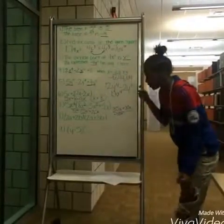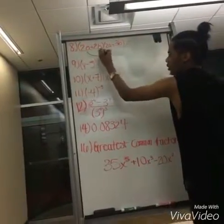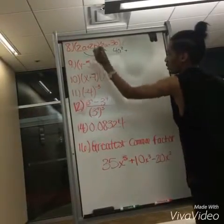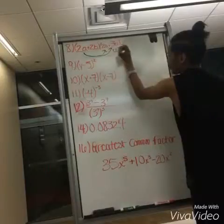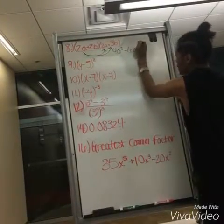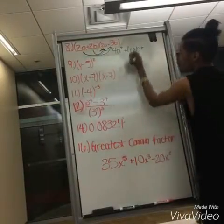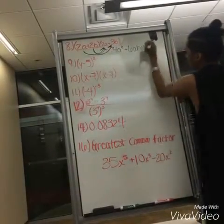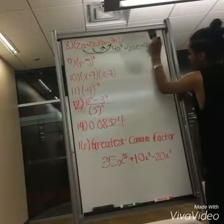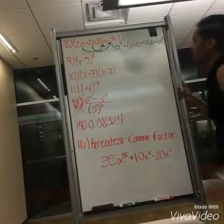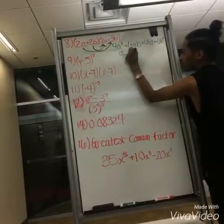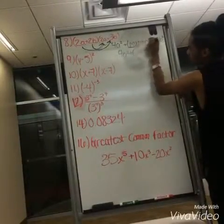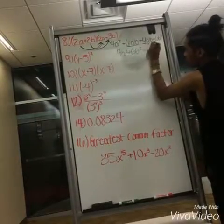That gives you to the eleventh power. For number eight, you would do 2a times 2a, which gives you 4a squared, plus 2a times 3b, which gives you 6ab, plus 2b times 2a, which gives you 4ab, plus 2b times 3b, which gives you 6b squared. When you add all that together, you get 4a squared plus 6b squared, and combining like terms gives you 10ab.